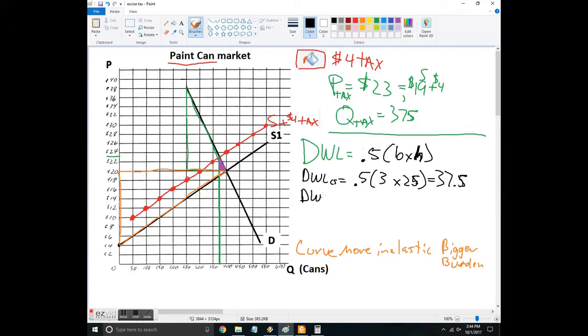Now the deadweight loss to the producer surplus is going to be one half. In this case, it's just one because it goes from 19 to 20 right there times 25. So it's lost 25 units, and so this is going to be 25 and then half of that is 12.50. And so in this market, we just add those and you're going to get a combined deadweight loss of 50. So this is the effect of the market here.